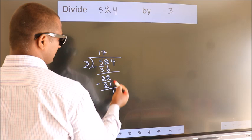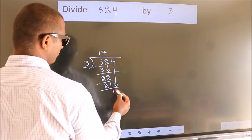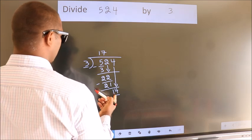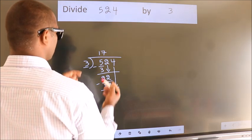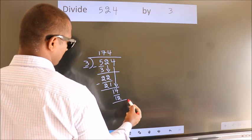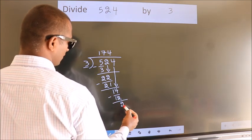After this, bring down the beside number. So, 4 down. So, 14. A number close to 14 in 3 table is 3 4s 12. Now, we subtract. We get 2.